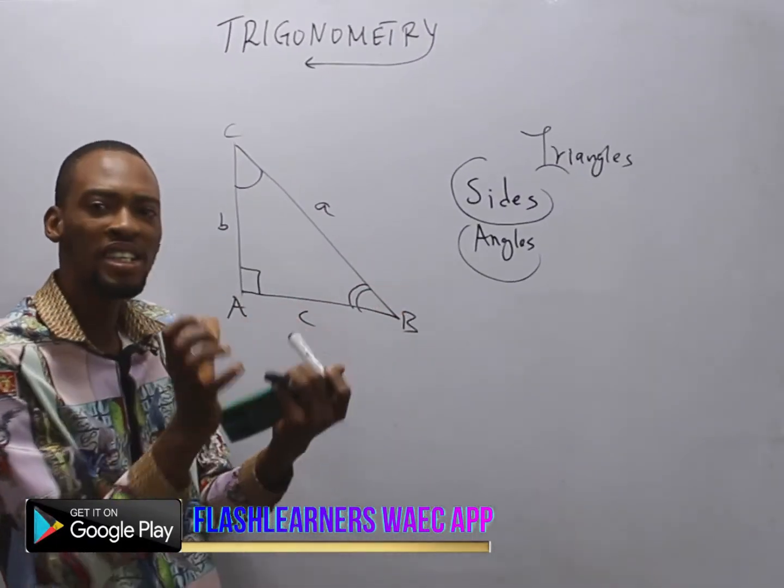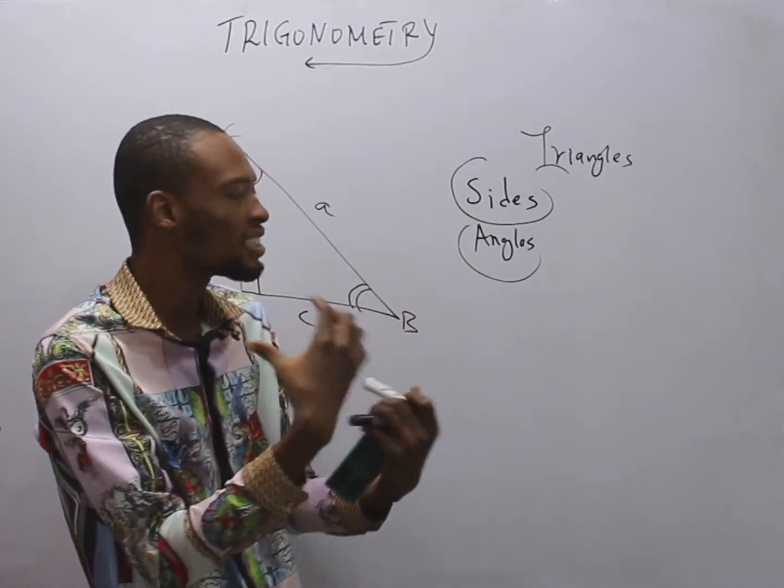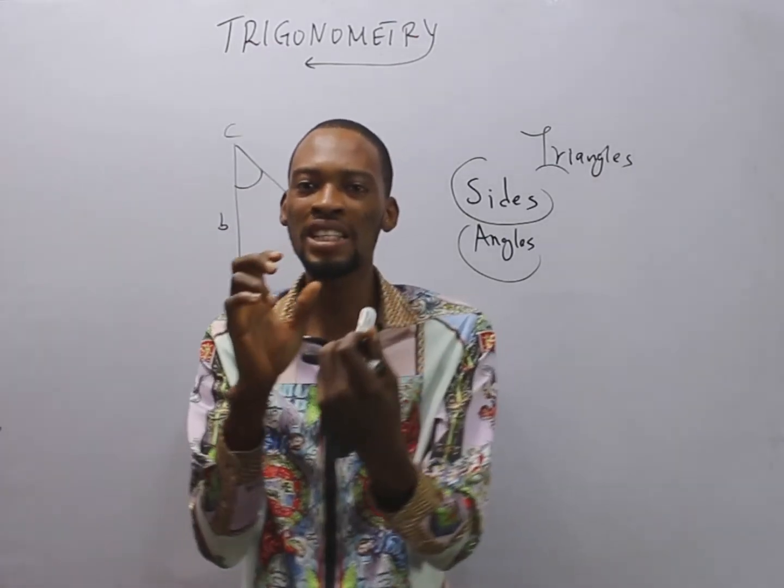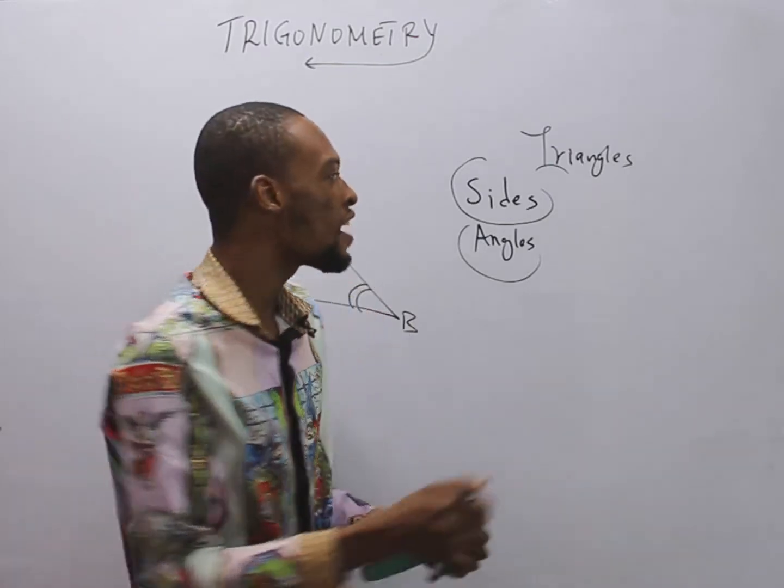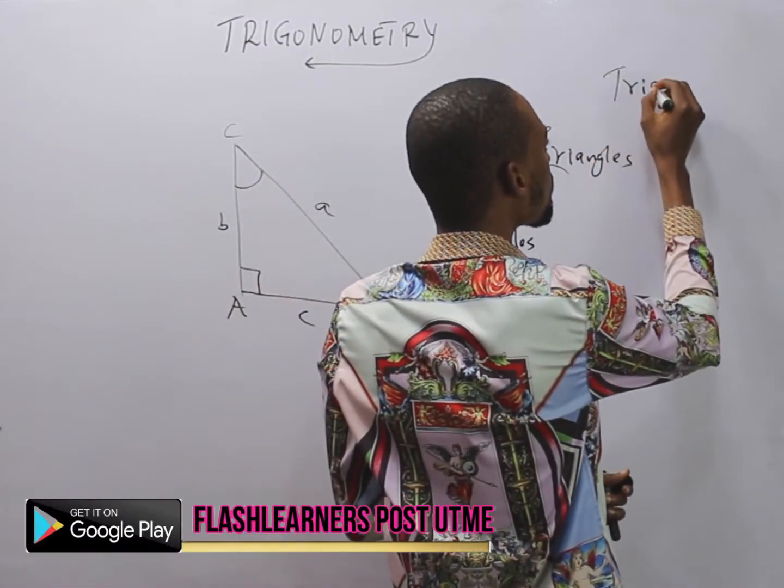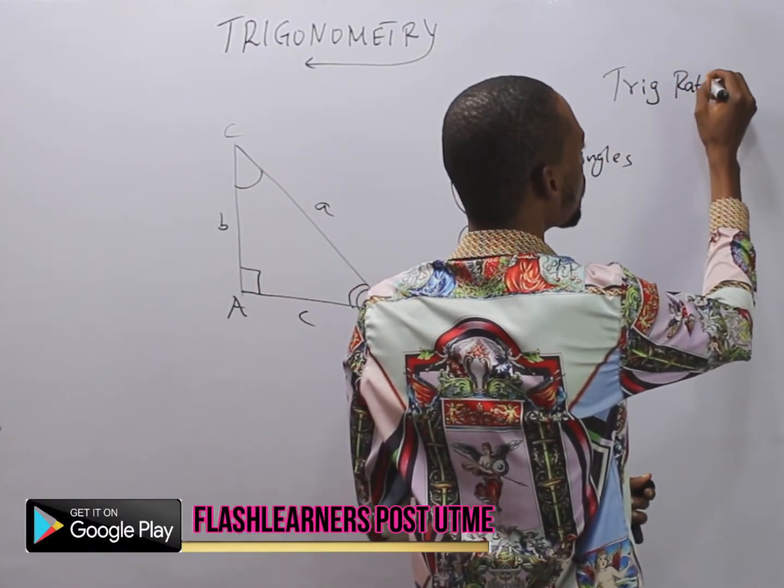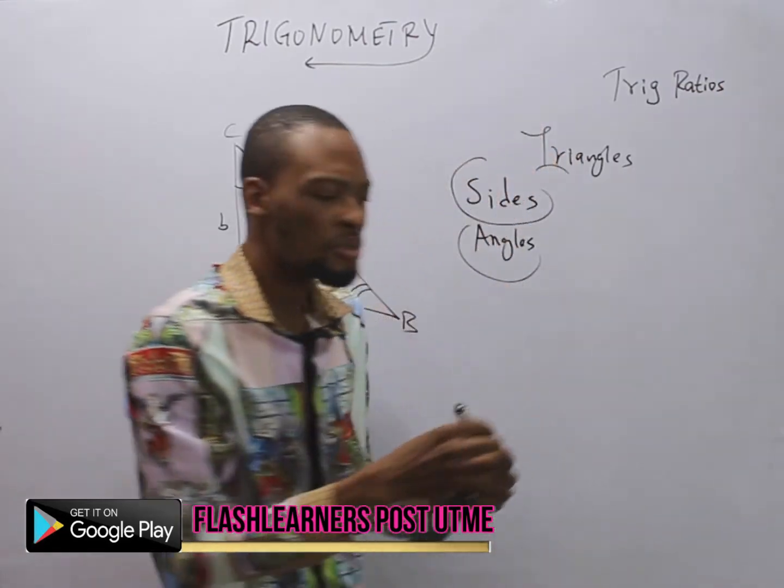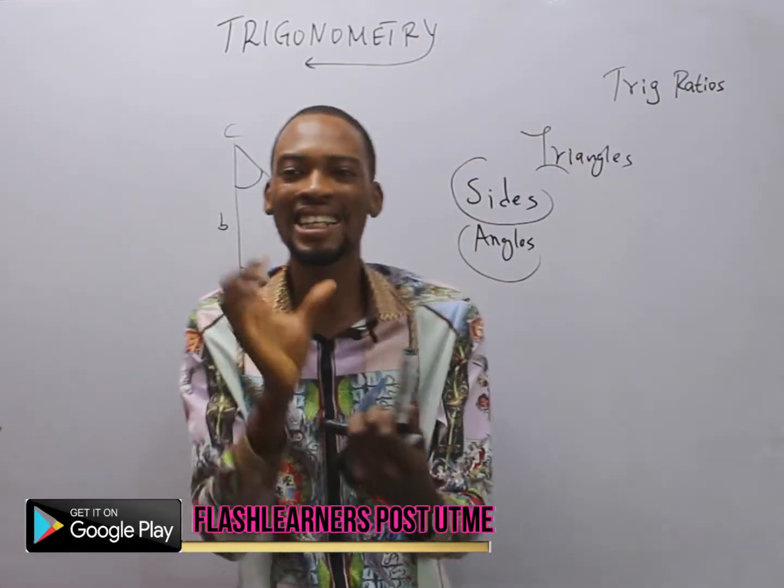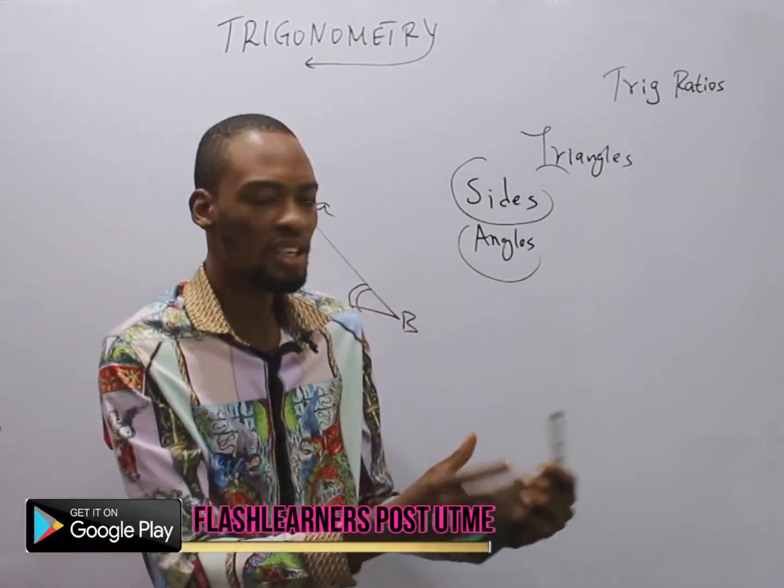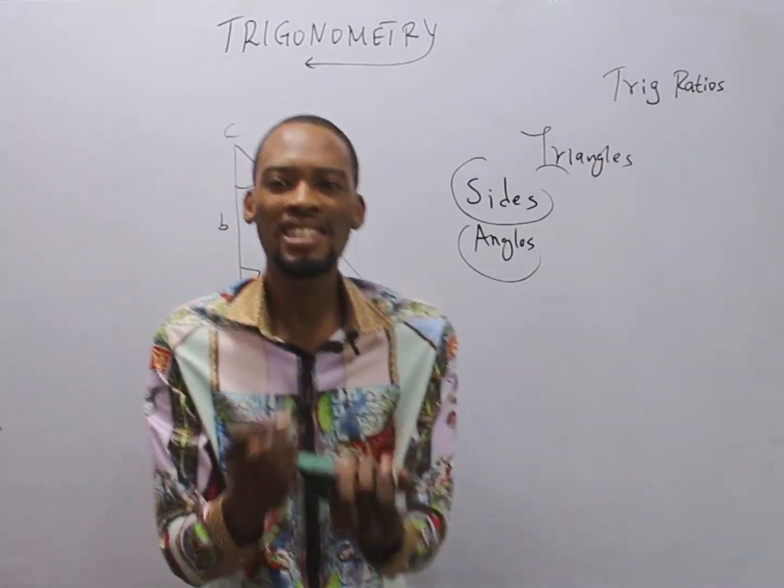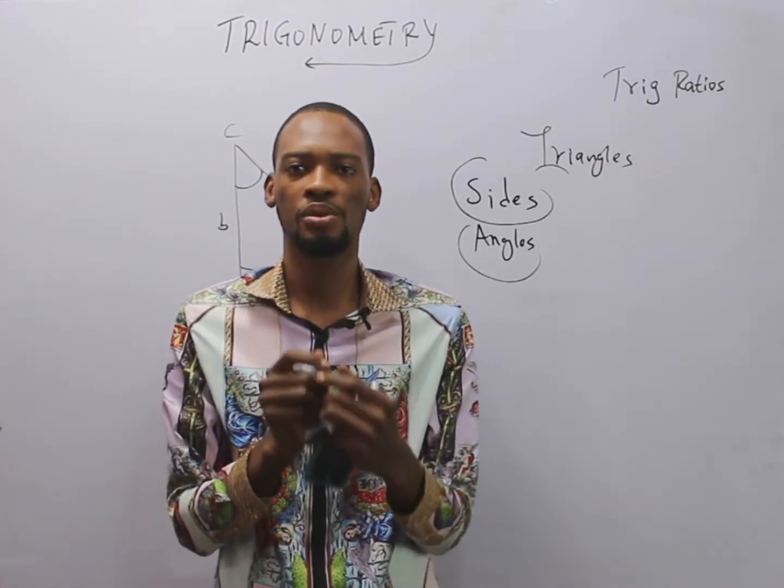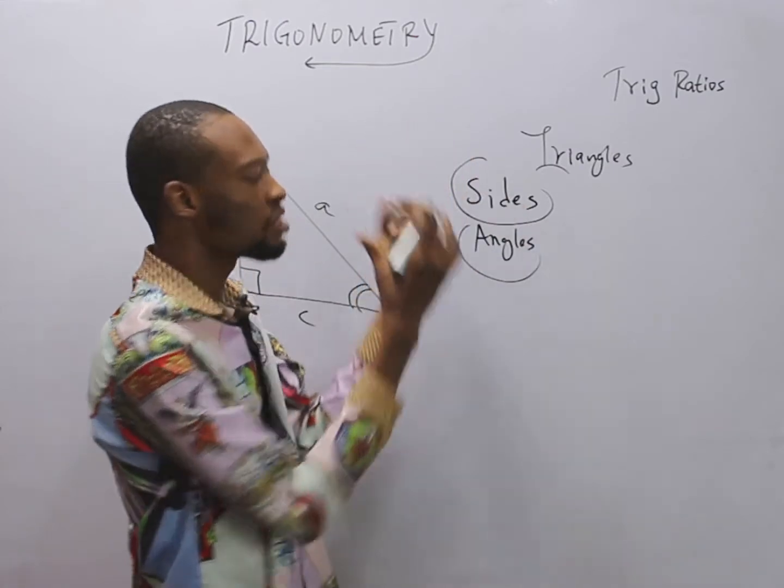The ratio of the sides of a triangle to any of its acute angles is referred to as trig ratios. So these trig ratios show the relationship between the sides and the angles of triangles. We have six trig ratios while dealing with trigonometry.